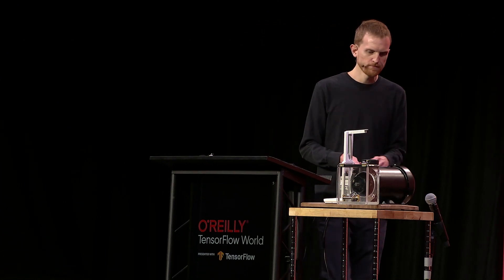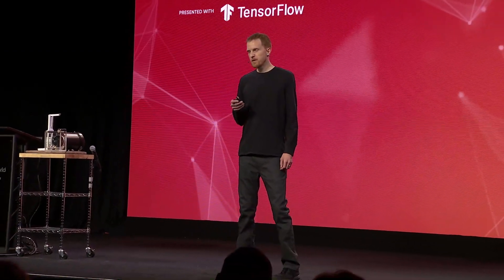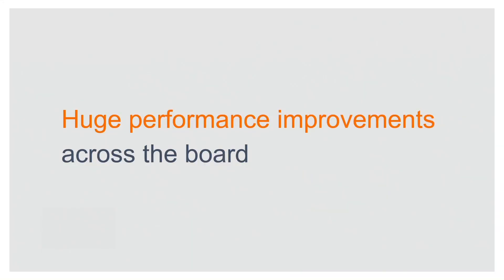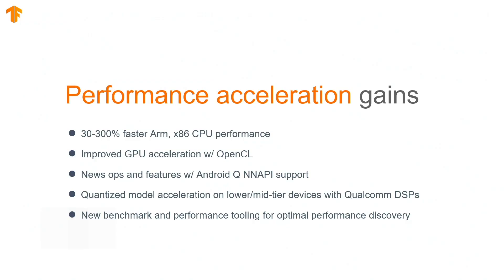Now I'd like to talk about some improvements and investments we've been making in the TensorFlow Lite ecosystem focused on improving your model deployment. A key goal of TensorFlow Lite is to make your models run as fast as possible across mobile and edge CPUs, GPUs, DSPs, and NPUs. We've made many investments across all of these fronts: significant CPU improvements, OpenCL support for GPU acceleration, updated support for Android Q API ops, and our previously announced Qualcomm DSP delegate targeting mid and low-end devices will be available in the coming weeks.